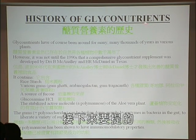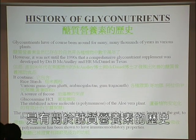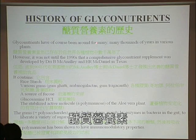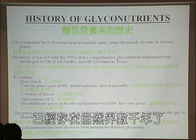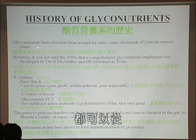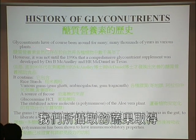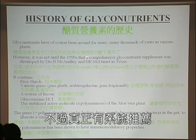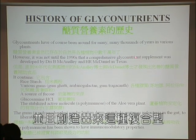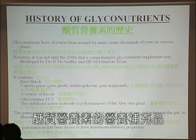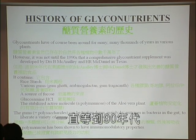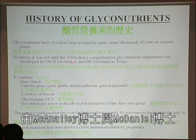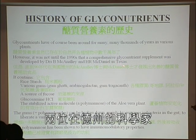So what is the history of glyconutrients? Glyconutrients have been around on earth for many thousands of years because the major source of them is various plants, fruits and vegetables. However, it was not until the 1990s that a comprehensive glyconutrient supplement called Ambritos was developed by Dr. McAnally and Dr. McDaniel at Manatech in Texas.